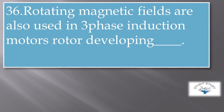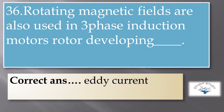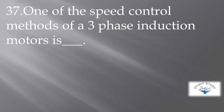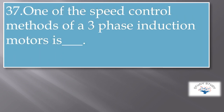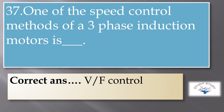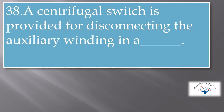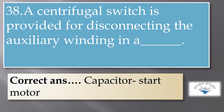The rotor develops eddy currents. One of the speed control methods of a three-phase induction motor is V/F control. A centrifugal switch is provided for disconnecting the auxiliary winding in a capacitor start motor.